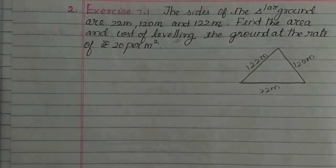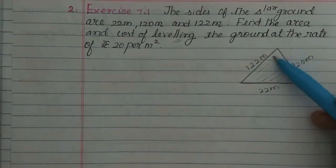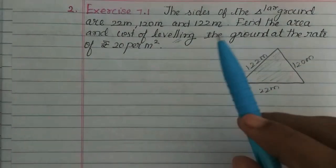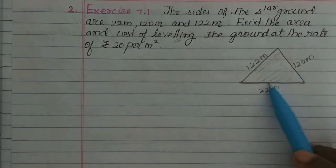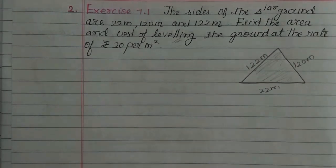Where do we flatten the area? In the triangle, the portion is flattened and leveled. So where do we level? The entire area needs to be leveled.